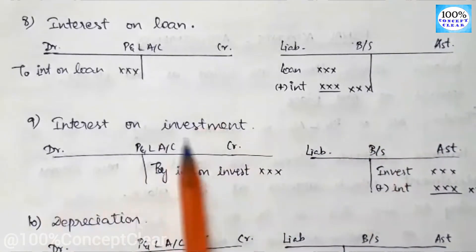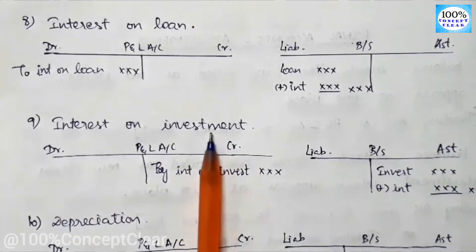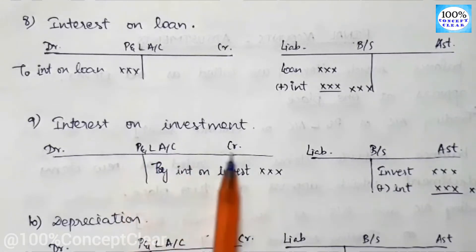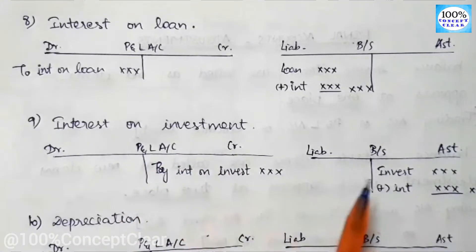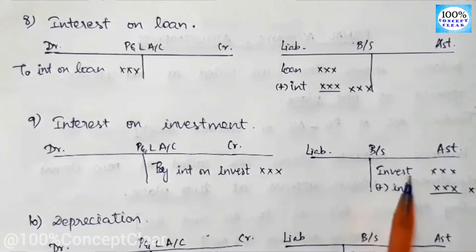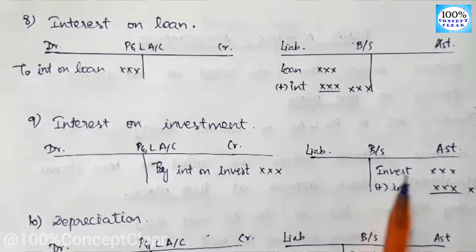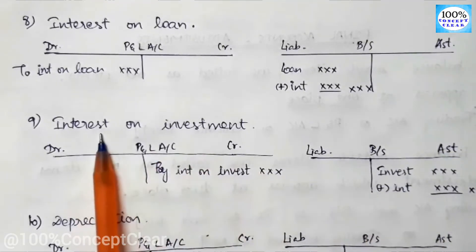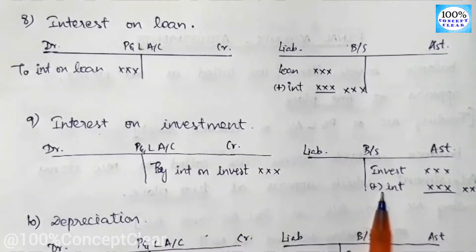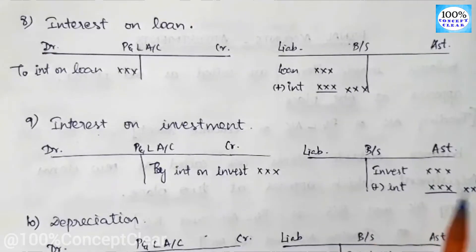Next is interest on investment. An investment is our asset and earns us interest — that is our income. So interest on investment appears in the P&L account on the credit side. On the balance sheet, the investment is shown as an asset. We add the outstanding interest on investment to the investment amount in the trial balance.